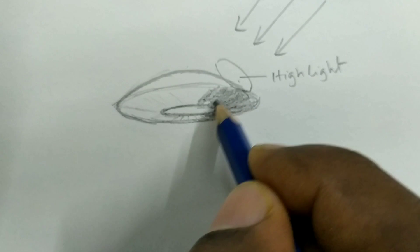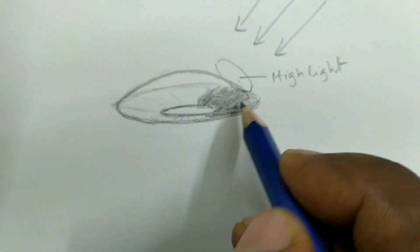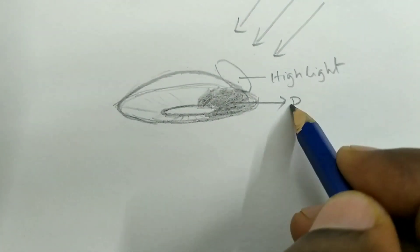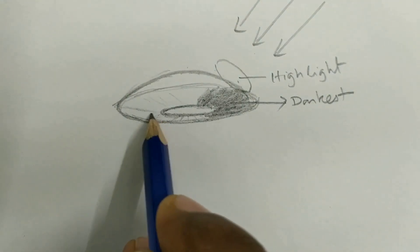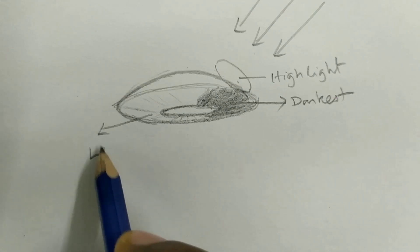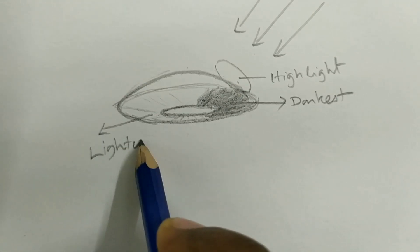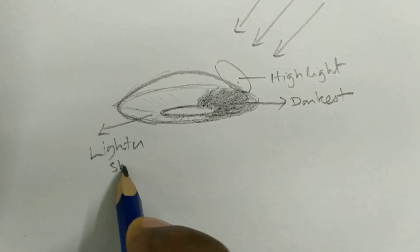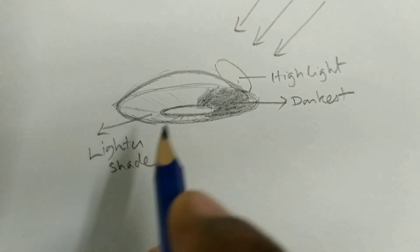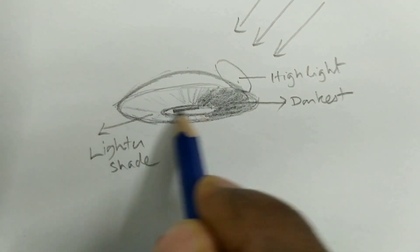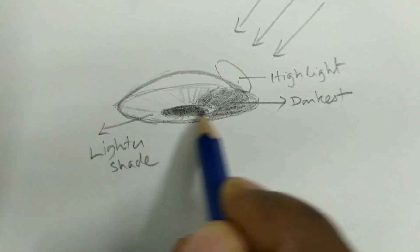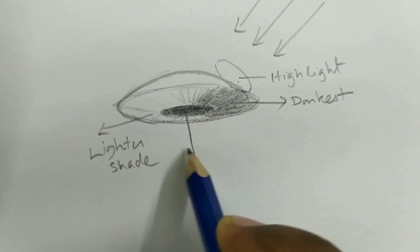Okay, darker area. The opposite side of the iris, this, the light is falling on that area so that area we will give lighter shade. This is the pupil that will be the darkest.